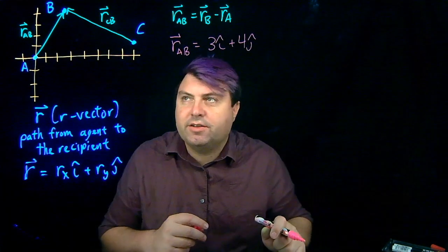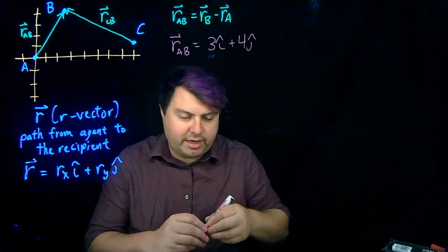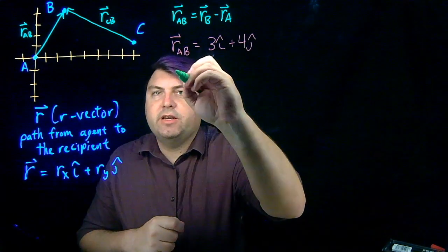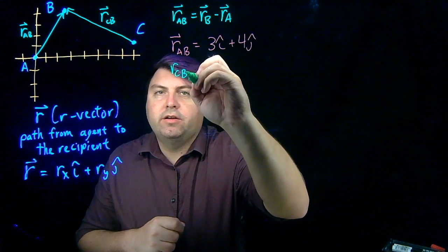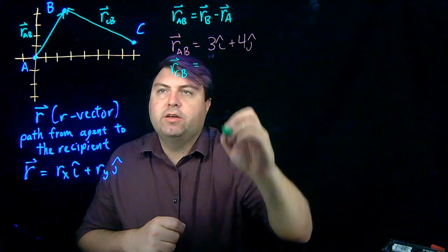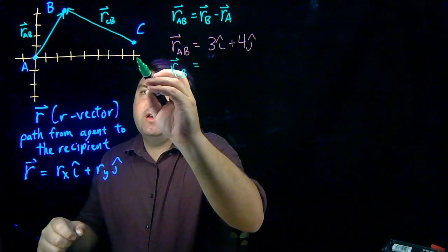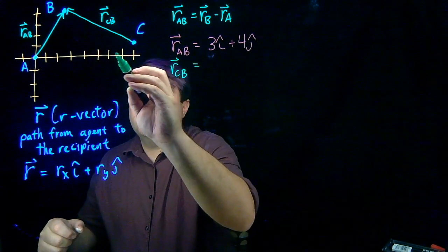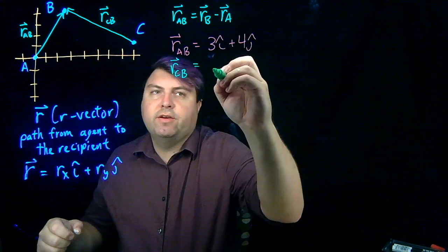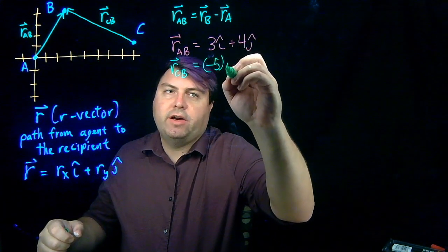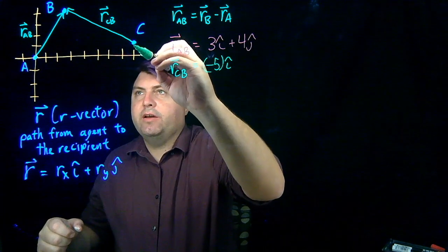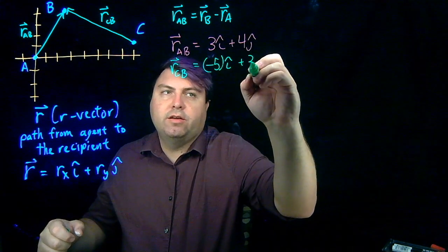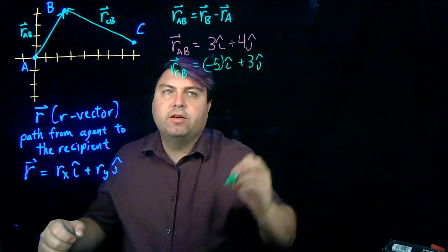Or if I want to look at the C-vector, I can say that r-C to B is going to be, well, I'm at 8, so negative 5 i-hat, and then I go up 3, plus 3 j-hat.